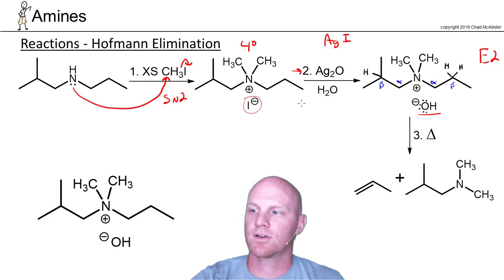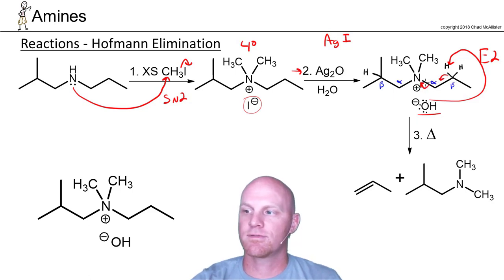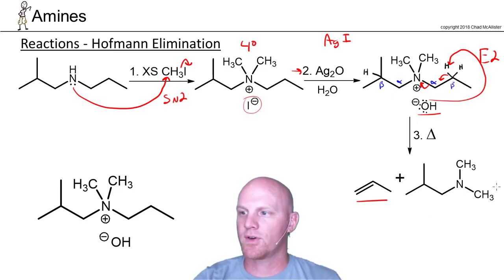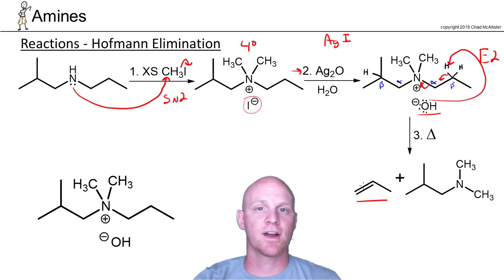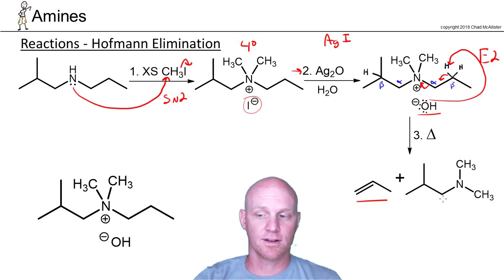When our hydroxide comes in and acts as a base, we're simply going to deprotonate one of those hydrogens, kick these electrons down to form the pi bond, and kick off the leaving group. So we're going to form a little 3-carbon alkene, and then we'll have the rest of the molecule as an amine as your product. The alkene is usually what we're trying to synthesize with the Hoffman elimination, but the amine is technically your other product.